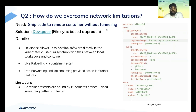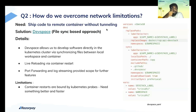So how do we avoid network limitations and ship code to the remote container without relying on the network? We shifted to a file-sync-based approach using a tool called DevSpace. DevSpace syncs local code into the remote container in a very efficient manner, does live reloading by container restart, and also has port forwarding and log streaming. However, there was a limitation: container restarts bound by Kubernetes probes were flaky at times and not completely reliable, so we wanted something better and faster.